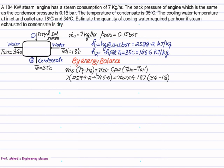Energy balance is given by heat rejected by steam equals heat gained by water. Mass of steam is given as 7 kg. H1 we have just found out is 2599.2. H2 is 146.6. Mass of water we need. CP of water is 4.187. Outlet temperature is 34, inlet temperature is 18. Solving this, the required cooling water comes out to be 257 kg per hour.